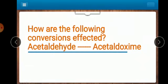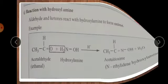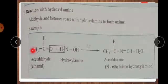Next question. How are the following conversions effected? Acetaldehyde to acetaldoxime. Formula acetaldehyde CH3C=O. This is acetaldehyde. Treated with hydroxylamine NH2OH. H2O is removed and remaining compound CH3CH=NOH. This compound is known as acetaldoxime.